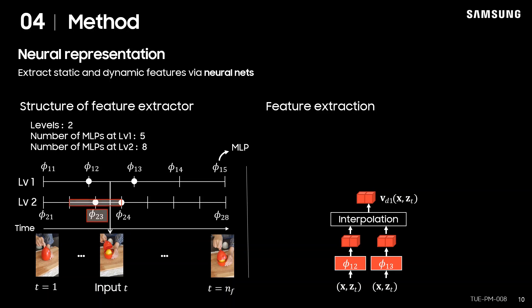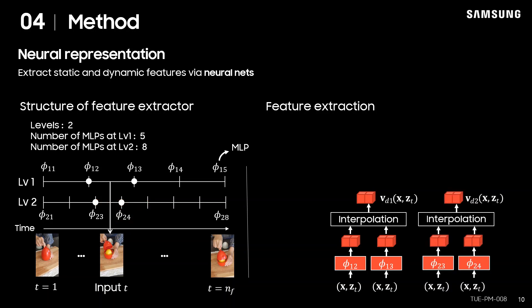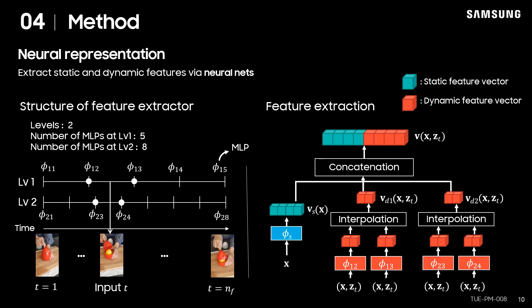Level 2, which has different number of MLPs, works similarly to output the interpolated features. Finally, those dynamic features are concatenated together with static feature vectors.